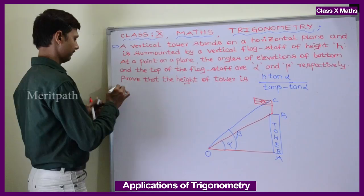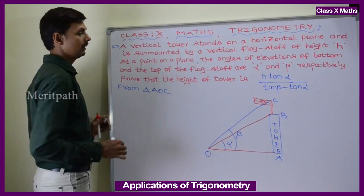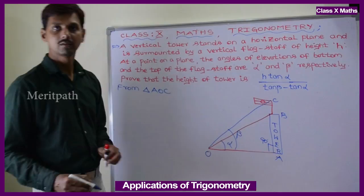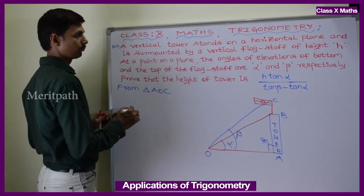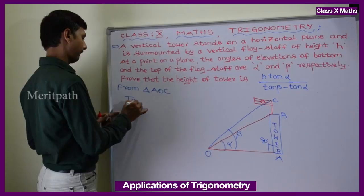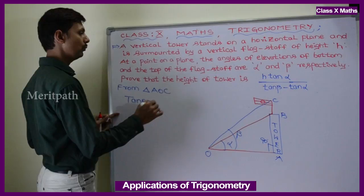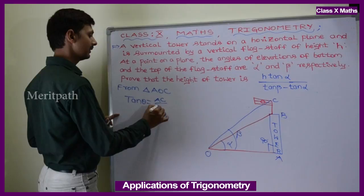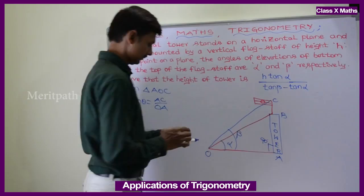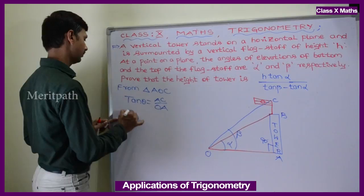From triangle AOC, it is a right angle triangle which makes 90 degrees with the ground. We can take tan of the angle, which equals opposite side by adjacent side. In triangle AOC, the opposite side is AC divided by adjacent side OA. The angle made here is beta.